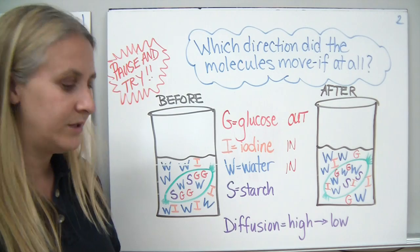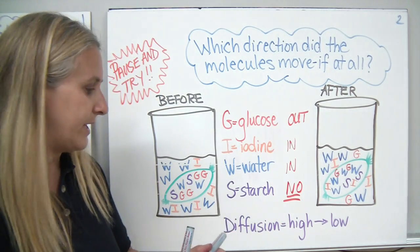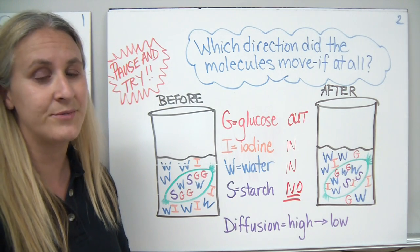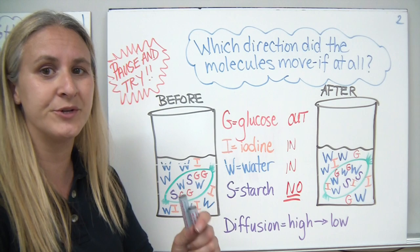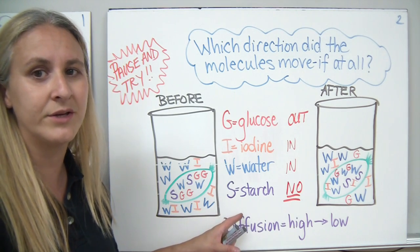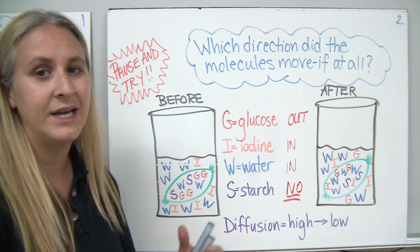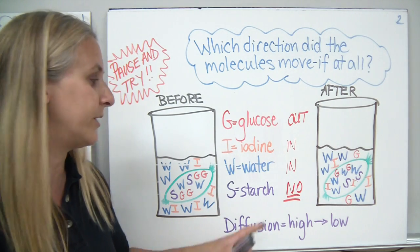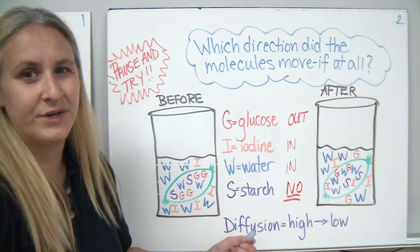Starch did not diffuse through the bag. Why not? Remember, the bag represents a cell membrane with pores. The pores in the bag are very small, just like the pores in the cell membrane, and starch is a very large, complicated molecule. Sometimes starch can have thousands of glucose molecules strung together, making it gigantic — it cannot fit through those small pores. So starch can't move by diffusion through a cell; it actually needs to be transported with energy.